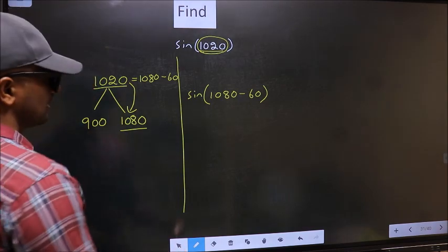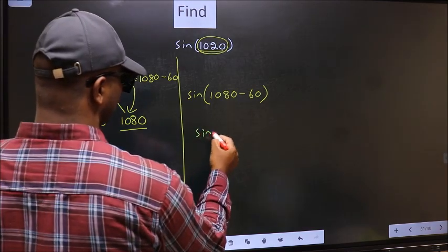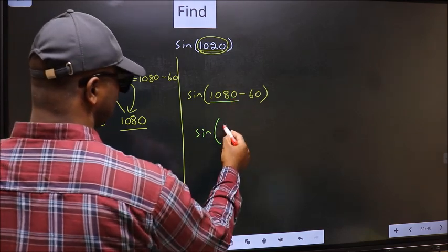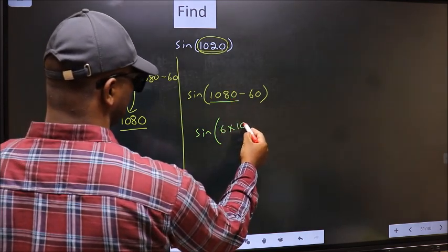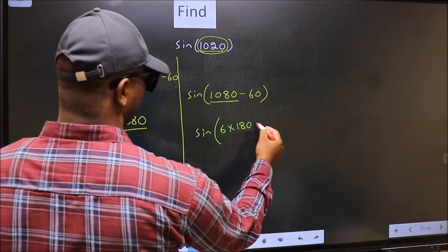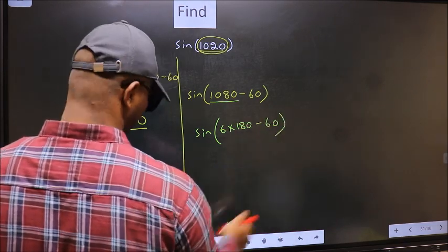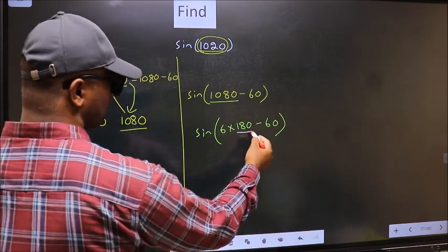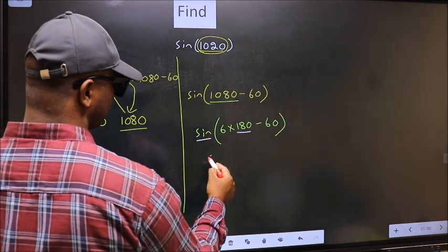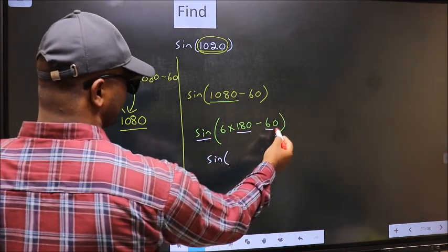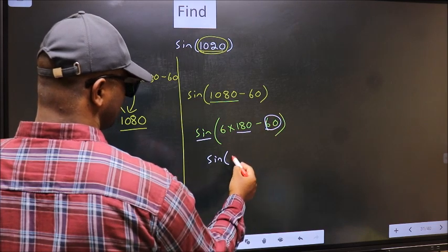Next, sin. Now in place of this, we should write 6 into 180 minus 60. If not going to change, it will remain sin. And inside, we get this angle, 60.